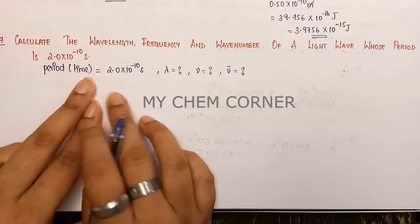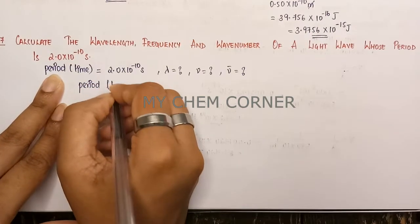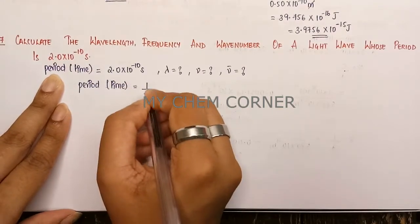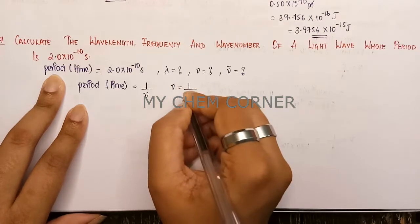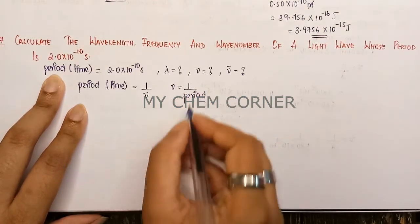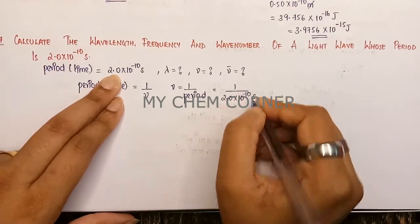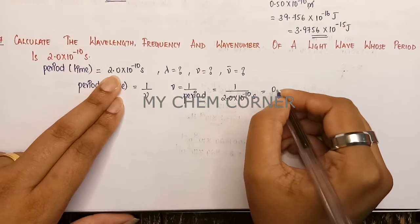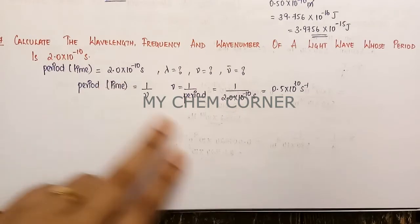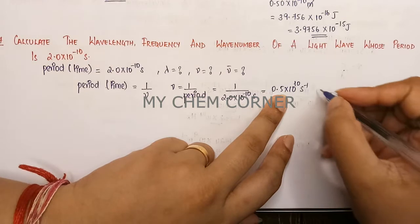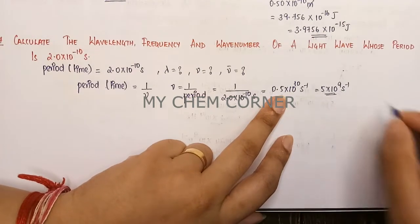When we check the formula for period, it is equal to 1 by frequency. But in this case we need to find frequency, so we write: frequency = 1 / period = 1 / (2.0 × 10⁻¹⁰ seconds). Simplifying, we get 0.5 × 10⁺¹⁰ seconds⁻¹, which becomes 5 × 10⁹ seconds⁻¹.